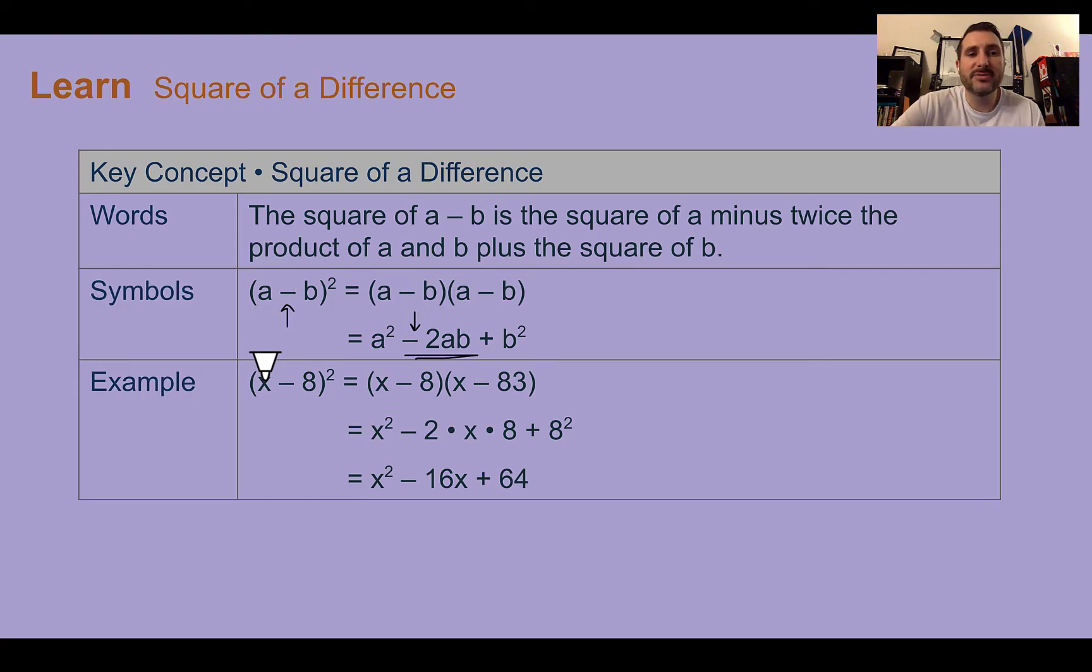Everything else follows the same. So x times x is x², 8 times 8 is 64. 8 times 1 is 8, and then multiplied by 2 is 16. And because it was subtraction, it's going to show subtraction. So x² - 16x + 64.